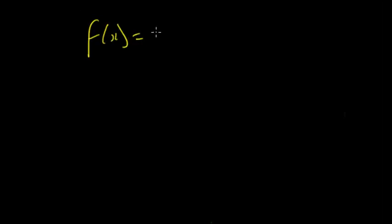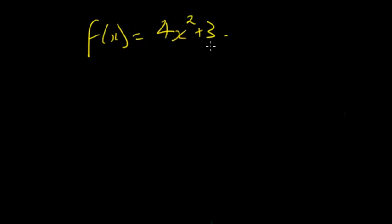We'll talk more about the instantaneous rate of change once we use differentiation. Differentiation allows you to calculate a gradient function from another function. So if you have f(x) = 4x² + 3, you can use differentiation to work out another function that tells you the gradient at different points. We'll first look at how to find gradient functions without differentiation, then you'll see how differentiation makes it much easier.